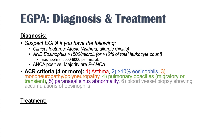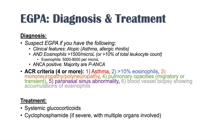Treatment involves systemic glucocorticoids as first-line therapy, and many patients will recover and go into remission. If the condition is severe with many organs involved, cyclophosphamide is added. Together, these typically achieve remission. Because EGPA is a chronic condition, maintenance therapy with immunomodulators such as azathioprine or methotrexate is required after the initial treatment.